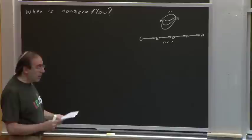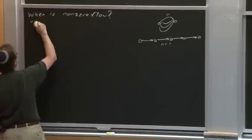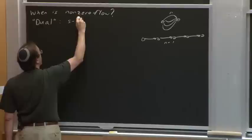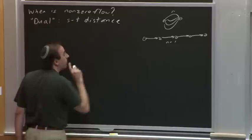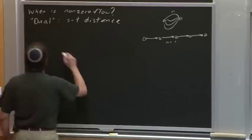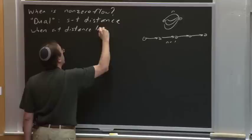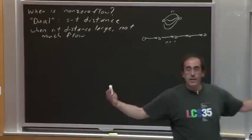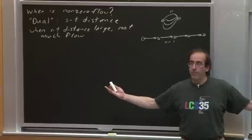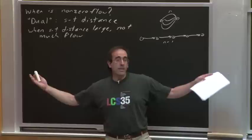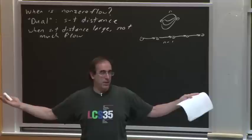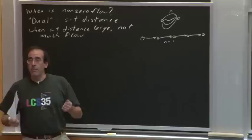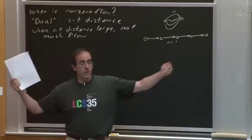We're going to use this dual idea to develop a max flow algorithm, making progress by increasing the s-t distance. When the s-t distance is large, not much flow can be delivered from s to t. In particular, once the s-t distance reaches n, no flow can be delivered — the maximum path length is n minus 1, so distance n means infinite distance, meaning there's a cut. So the algorithm tries to increase the distance from s to t until they are unreachable from each other.